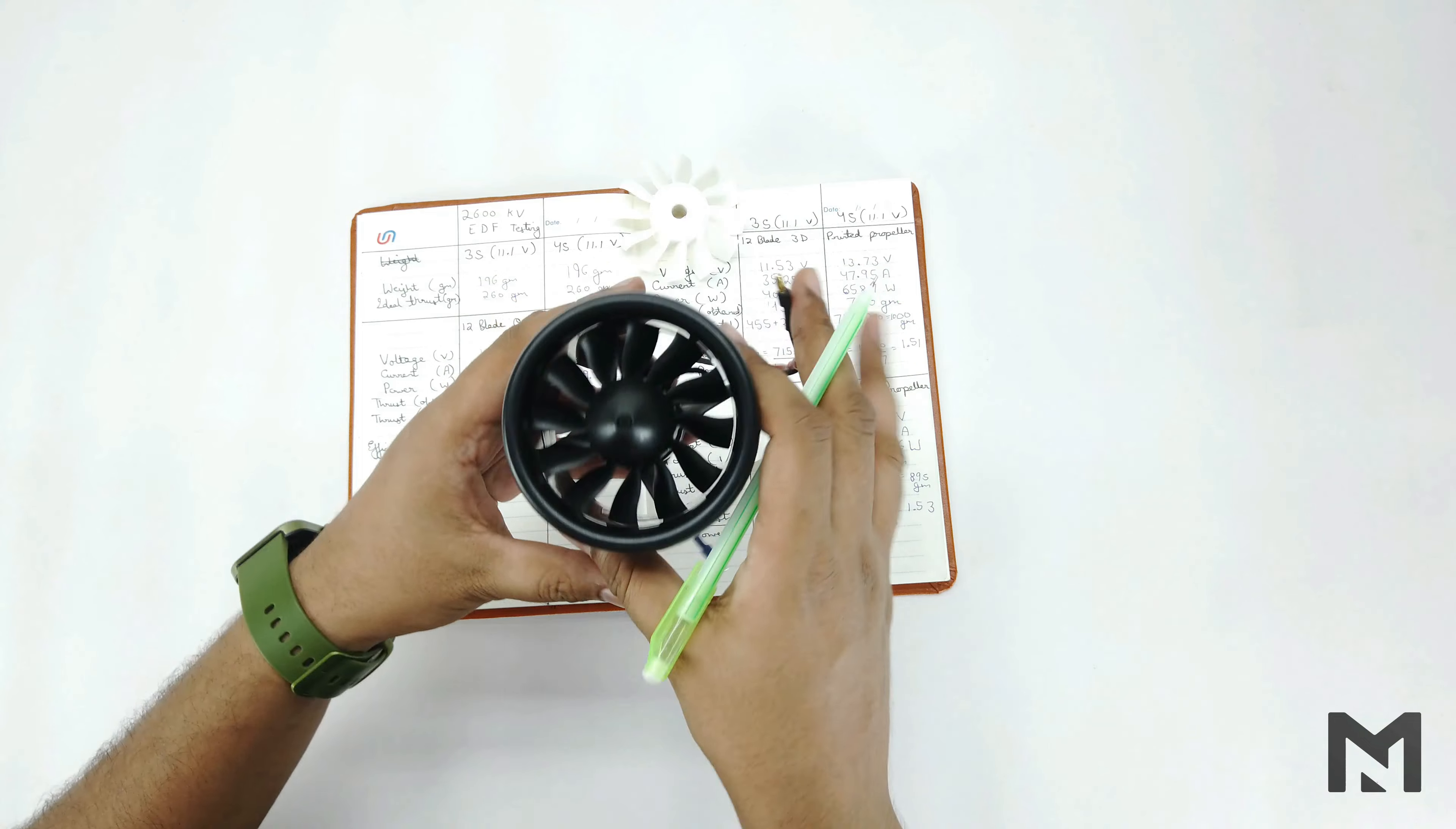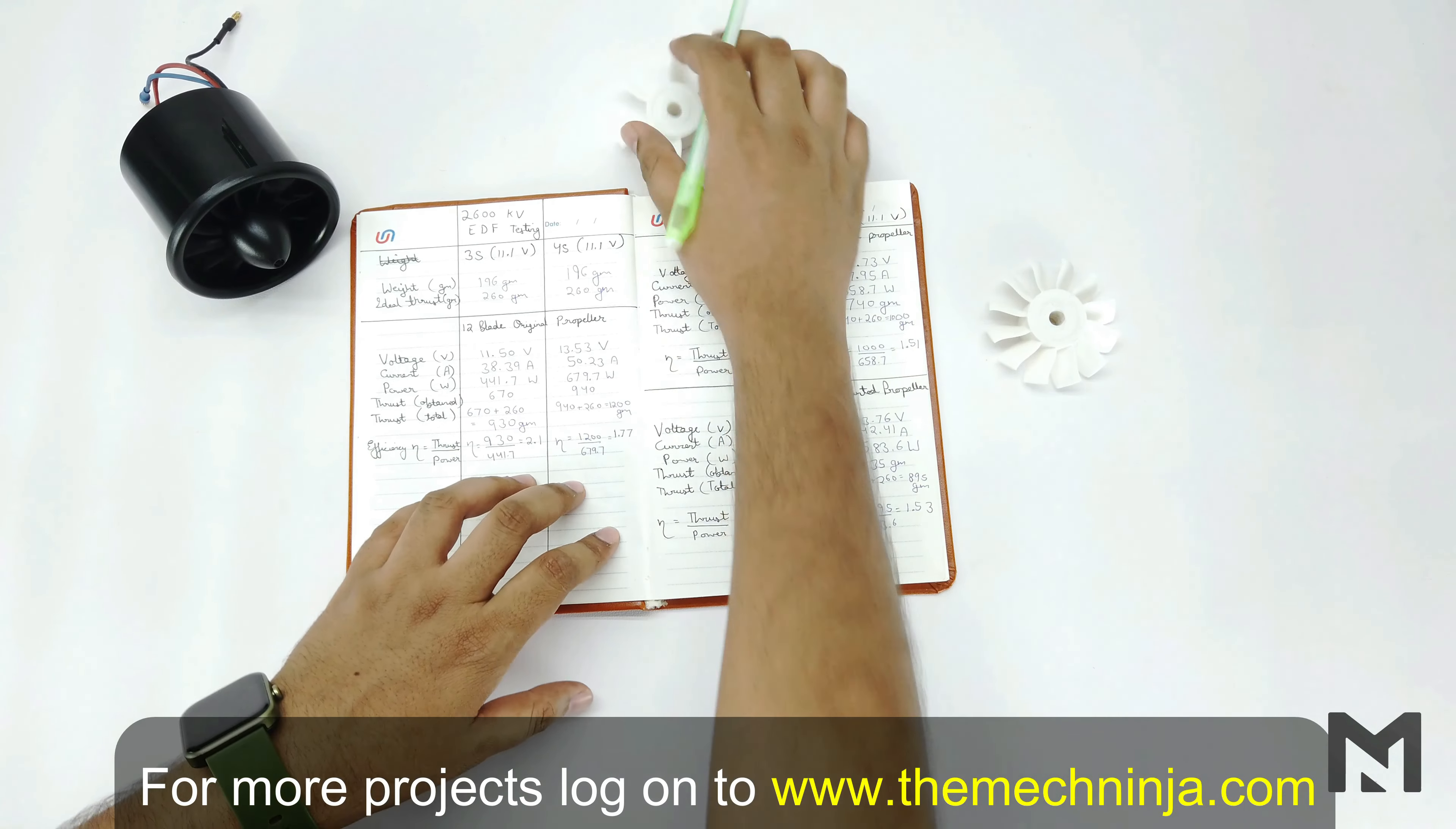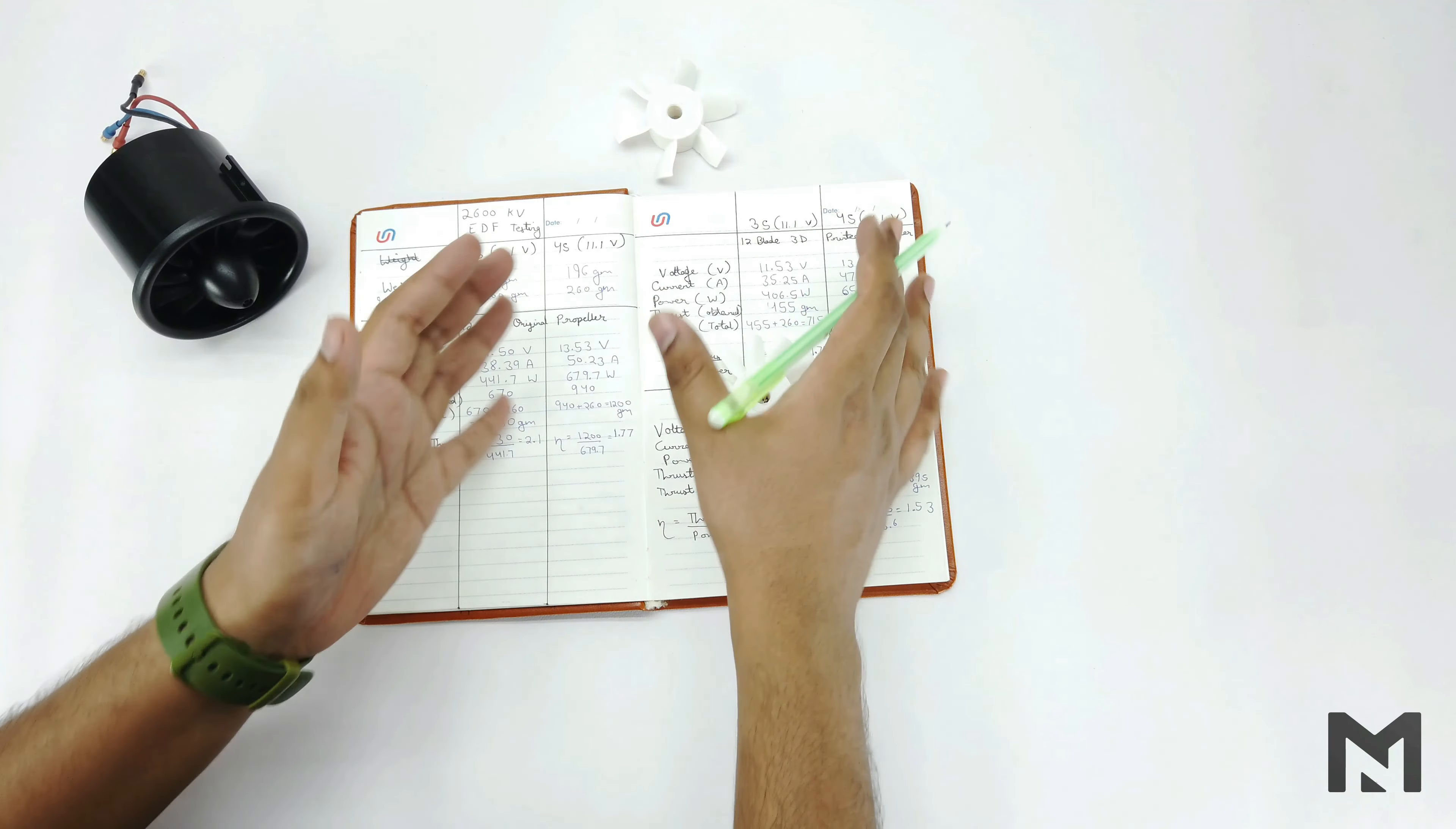So no doubt this Dynam 70mm EDF will perform the best since it was purchased from the market and has a smooth finish. And the 3D printed propeller has little distortion and rough surface finish because of the machine tolerance. So we have done the analysis of all the three propellers, and no doubt this Dynam 70mm EDF is the best one. This 12-bladed 3D printed propeller that we have designed was also good. And in future I will do the research and make it better as compared to this Dynam 70mm EDF.